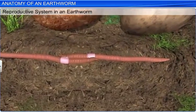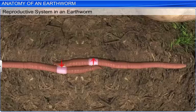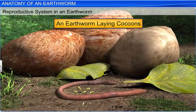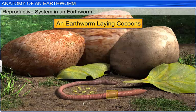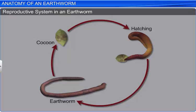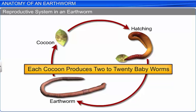Although earthworms are hermaphrodites, each worm mates with another worm. While mating, two worms lie in a juxtaposed position, resulting in a mutual exchange of sperm between the two worms. Later, cocoons containing mature sperm, eggs, and a nutritive fluid are secreted by the gland cells of the clitellum. The eggs are fertilized by the sperm in the cocoons and are deposited in the soil. Inside the cocoons, embryos develop, and after three weeks, each cocoon produces about 2 to 20 baby worms. These baby worms show direct development, which means the larval stage is absent.